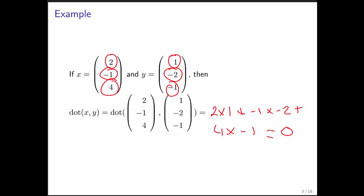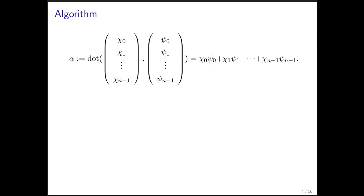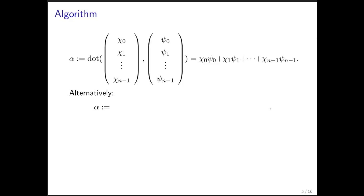Later, we're going to see that a dot product of 0 means that these two vectors are orthogonal to each other. Now let's have a look at an algorithm for computing the dot product. We're going to compute alpha as the dot product of vectors x and y, which is defined as such.